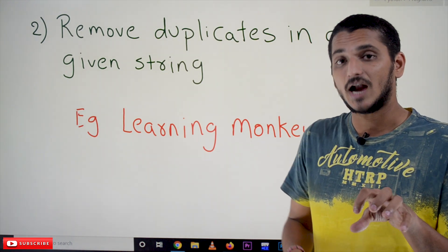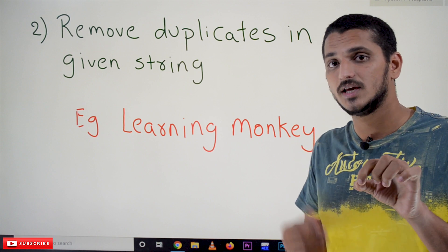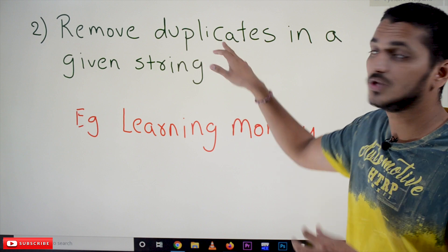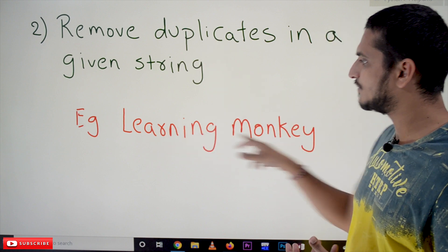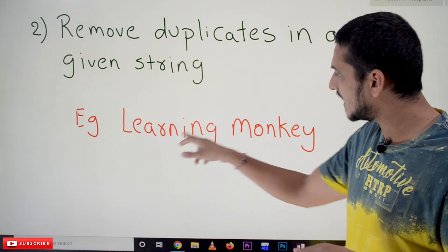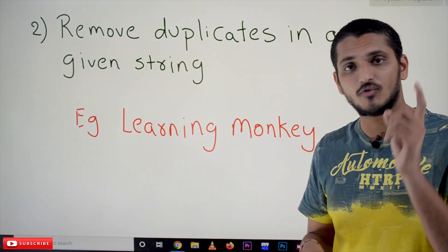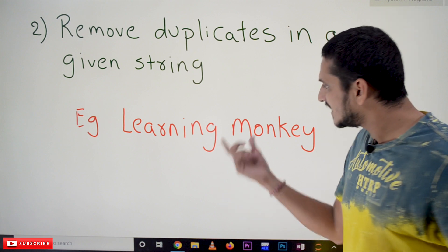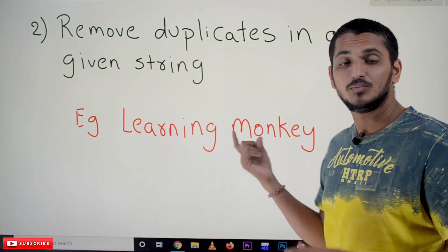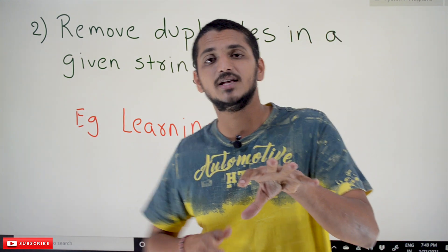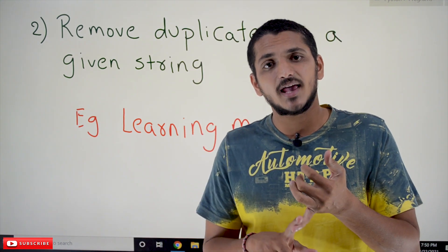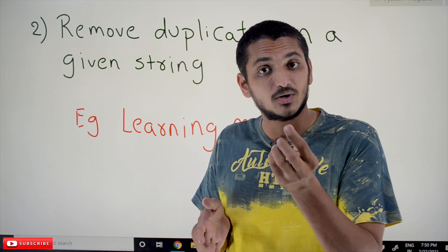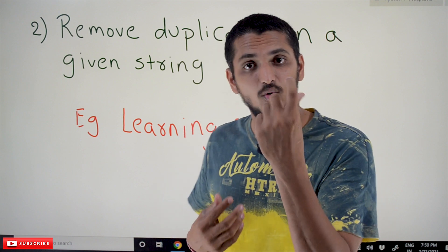Coming to our next example: remove duplicates in a string. This is a bit different and we will understand the importance of set data type here. For the string 'learning monkey', 'n' appears multiple times, so we have to keep one 'n' and remove the remaining duplicates. The key concept here is: set is an unordered collection of unique elements.